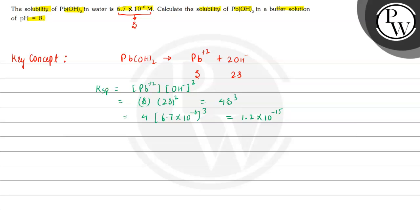The pH is equal to 8. So pOH equals 14 minus pH, that is 14 minus 8, which equals 6. From this we can find the concentration of OH⁻. The OH⁻ ion concentration equals 10 raised to the power negative pOH, that is 10⁻⁶.